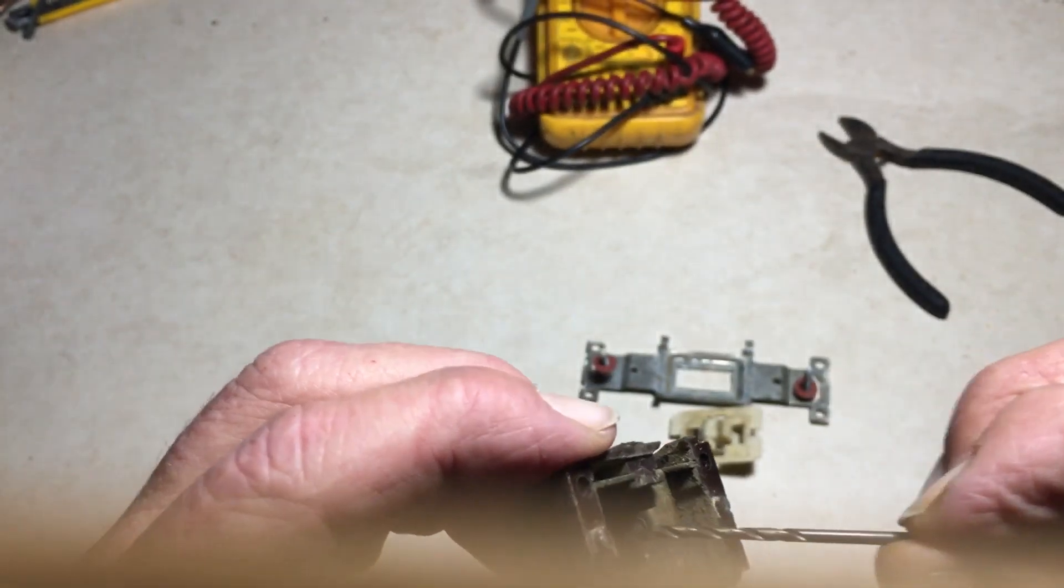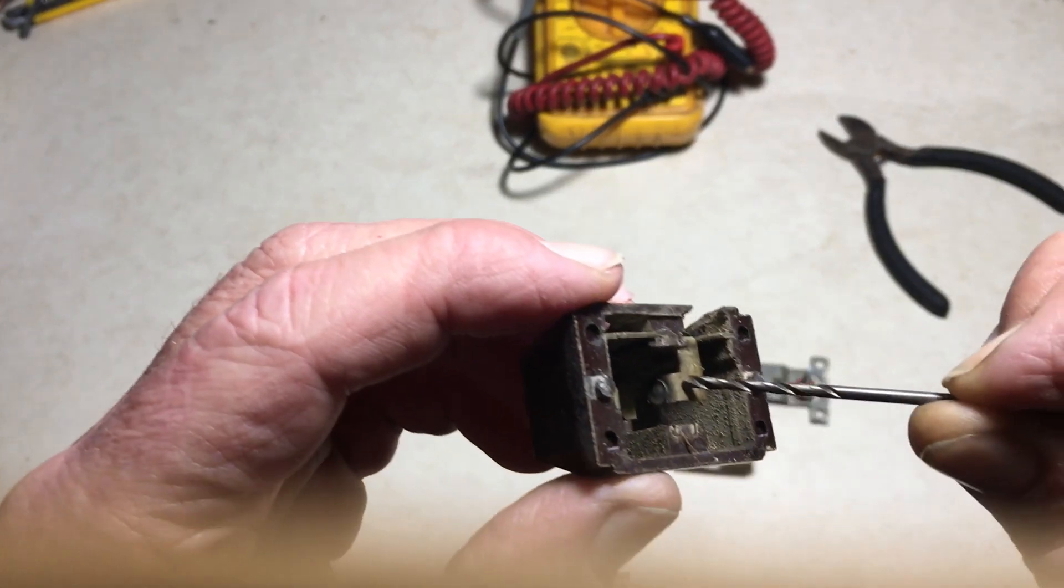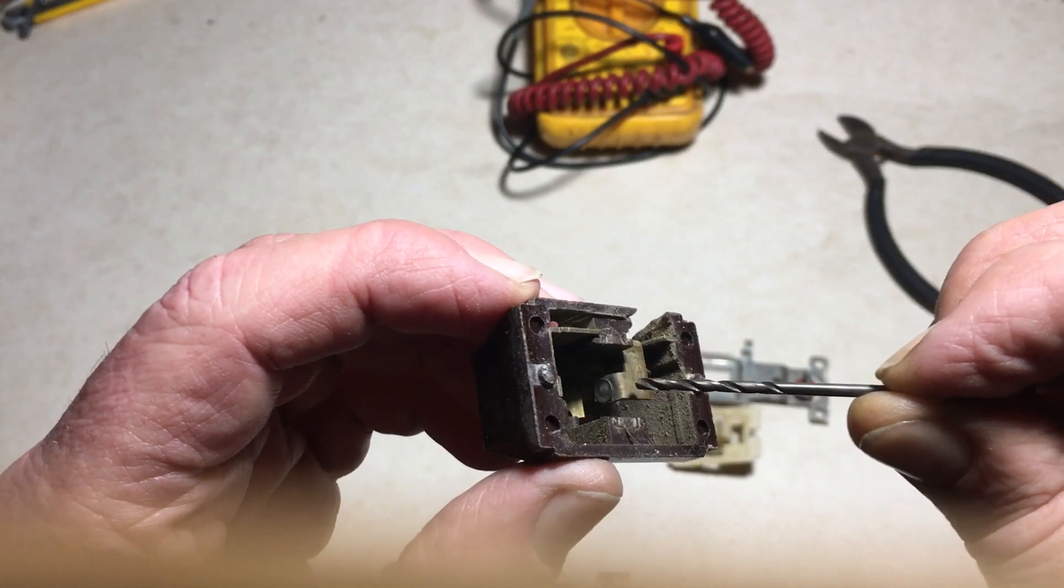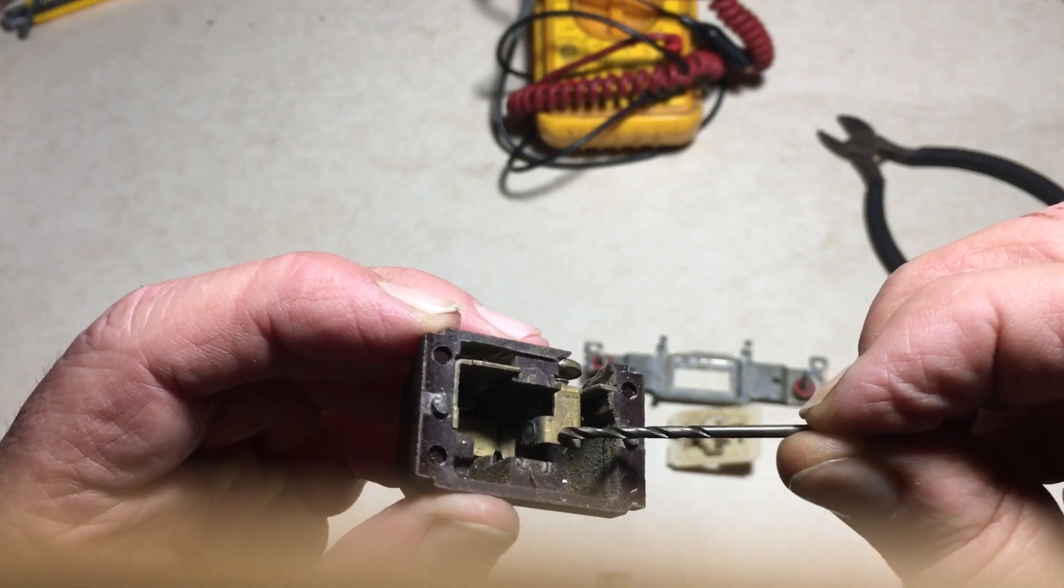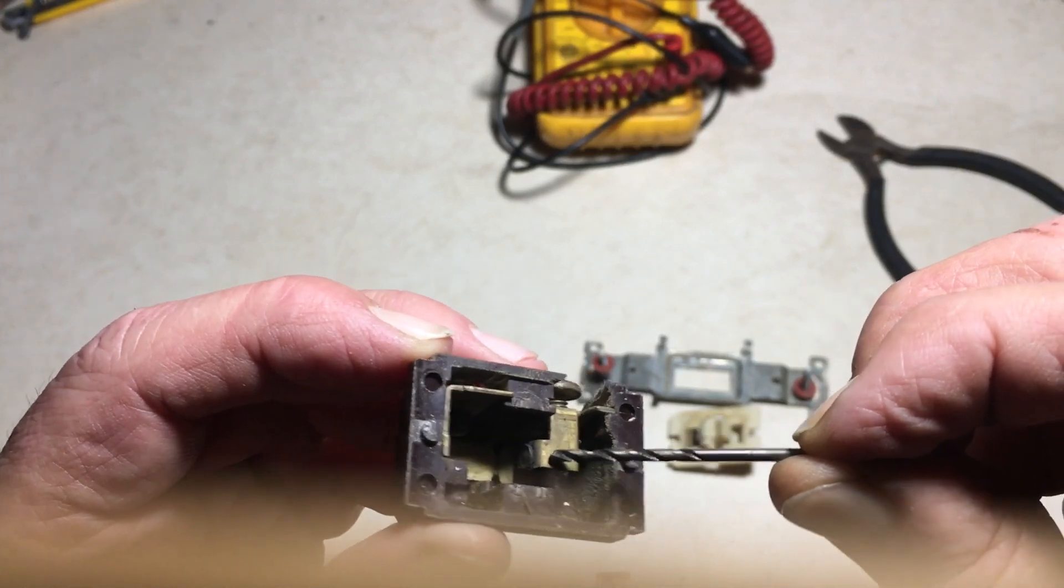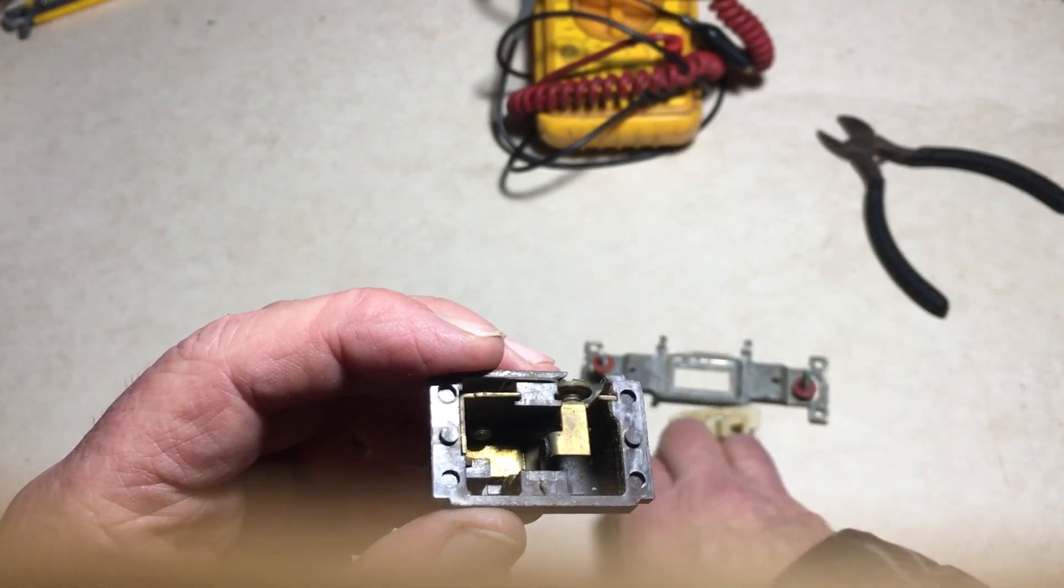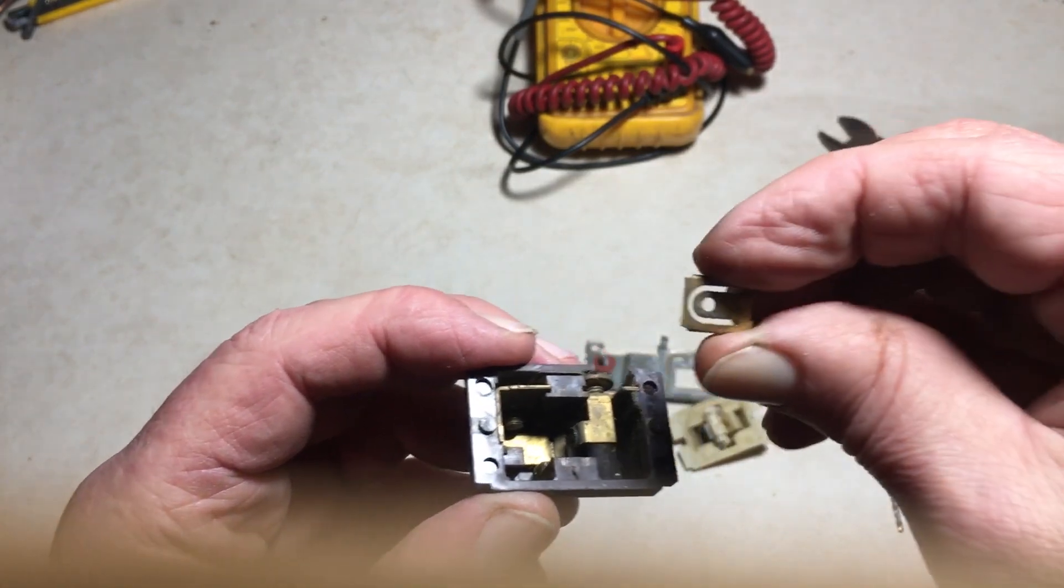Well you can see that the two contacts are actually fused together. One came out of the rocker piece and fused onto the stationary contact. So that's why it wouldn't make the contact at all. Two contacts were frozen and one of course was actually separated from the rocker piece.